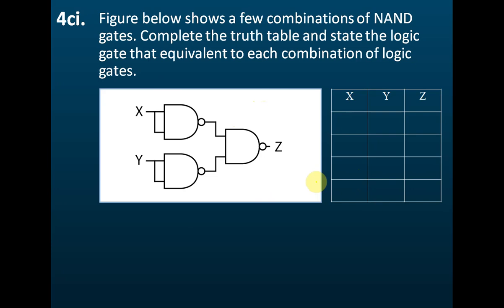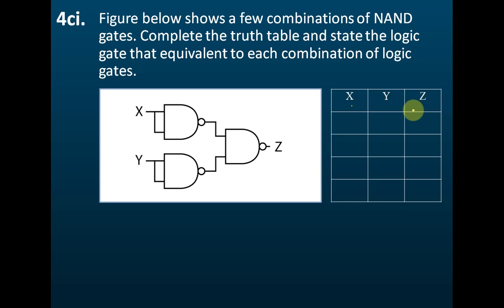In the exam, sometimes they may want you to draw the truth tables by yourself. To draw the truth tables, first you need a table with three columns and five rows. The first row is the title, so we have input X, input Y, and then output Z.